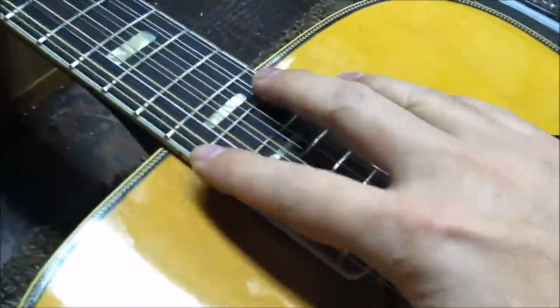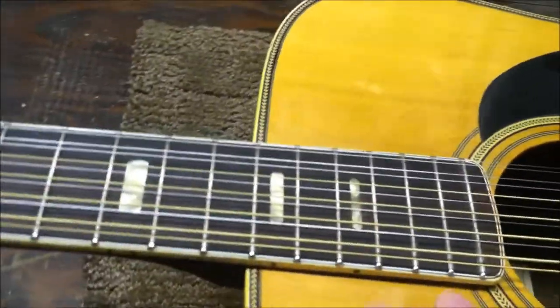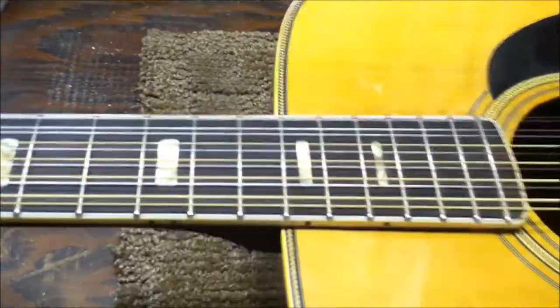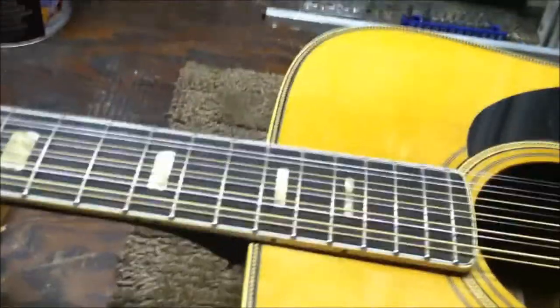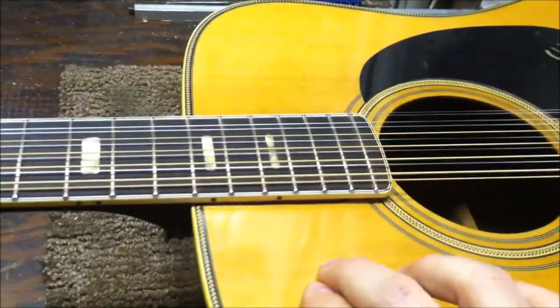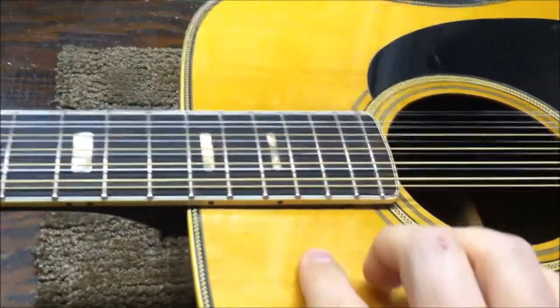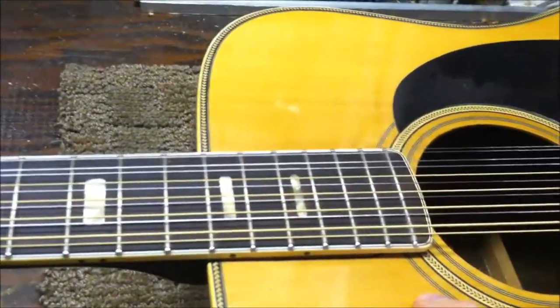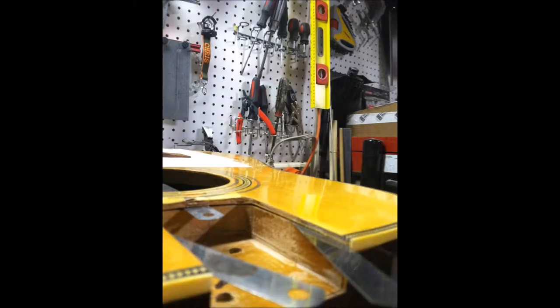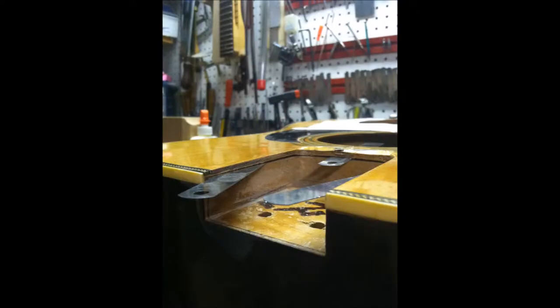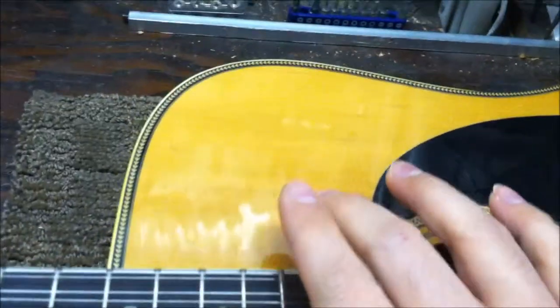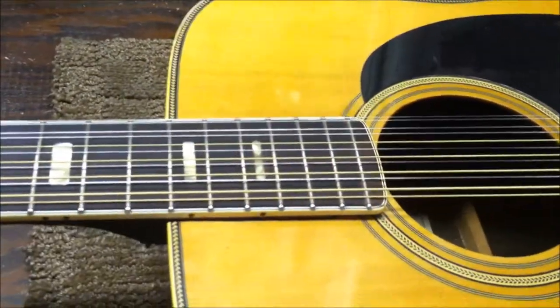Also underneath here you had a neck block that was completely separated from the top. Every time the guitar would be tuned to pitch, that pull would move the top as well. It was in bad shape. You also have the upper face brace across here that also needed some re-gluing.